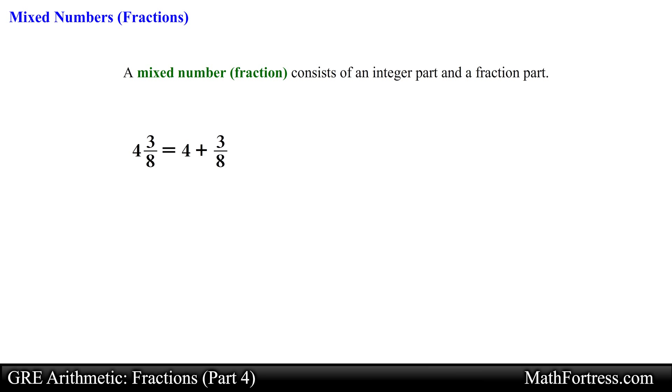For the most part you should get rid of mixed numbers by converting them to fractions. To convert a mixed number to an ordinary fraction convert the integer part to an equivalent fraction with the same denominator as the fraction part and add both of them together. In this example we rewrite 4 as a fraction by including a 1 in the denominator. Then we go ahead and write an equivalent fraction by multiplying both numerator and denominator by 8.